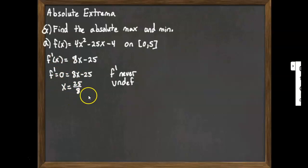And at this point now, for our absolute extrema, what we do is we take our function f here, and we're going to evaluate it at the two endpoints and at any of our critical points that are in the interval. This time, we only have the one critical point. So we're actually going to evaluate f at 0, at 25 eighths, and at 5.